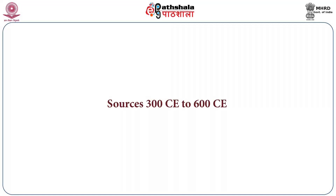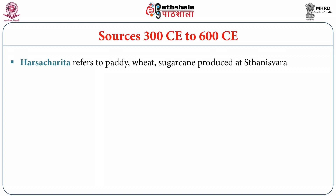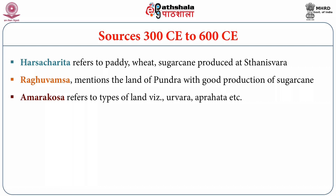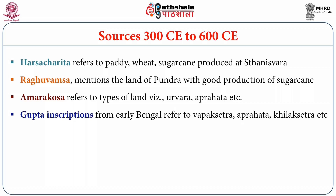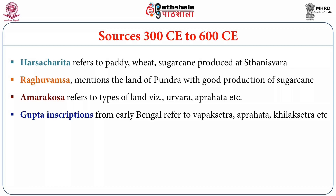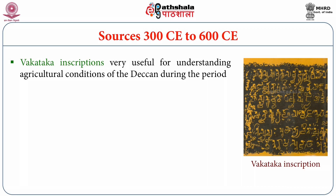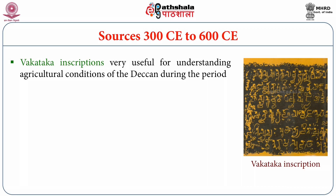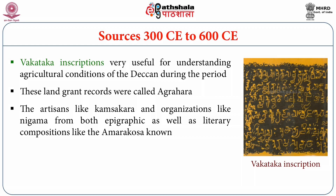Let us see sources from 300 CE to 600 CE. The land of Pundra refers to good production of sugarcane. Amarakosha refers to types of land — Urbara, Aprahata, etc. Gupta inscriptions from early Bengal and Pundra referred to Vapokhetra, Aprahata, Khilokheta, and different land measurements like Dronavapa and Kulyavapa. Vakataka inscriptions are very useful for understanding agricultural conditions of the Deccan during the period. These land grant records were called Agrahara. The artisans like Kamsakara and organizations like Nigama are known from both epigraphic and literary compositions like Amarakosha.